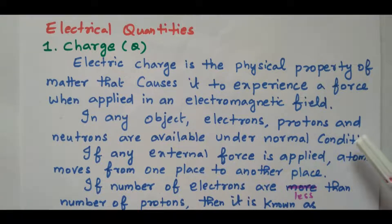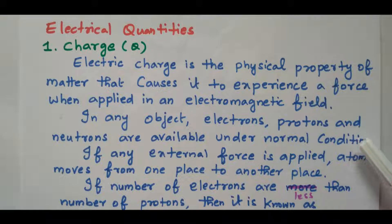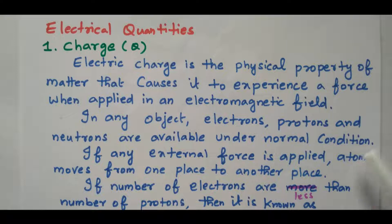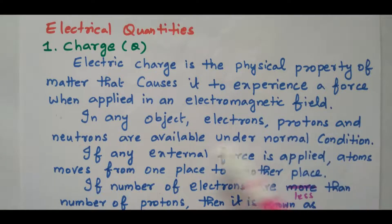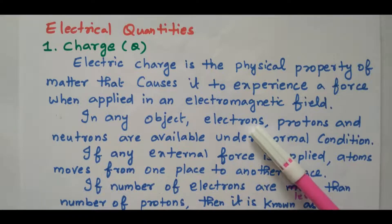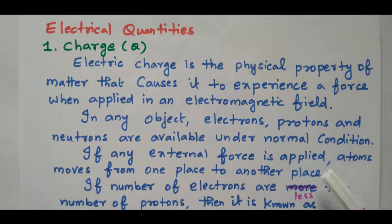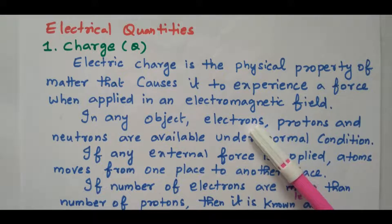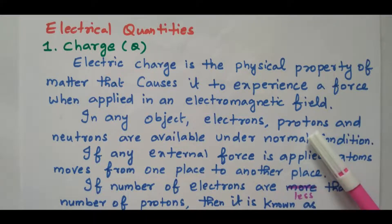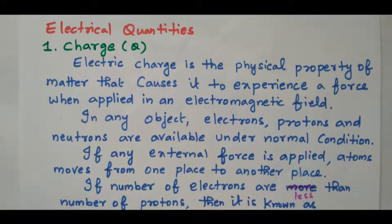Charge is nothing but a property of the matter. When an electromagnetic field is applied, it experiences a force. In any object, there are a number of electrons, protons and neutrons available under normal condition. Electron is negatively charged, proton is a positive charge, and neutron is neutral — there is no positive or negative.